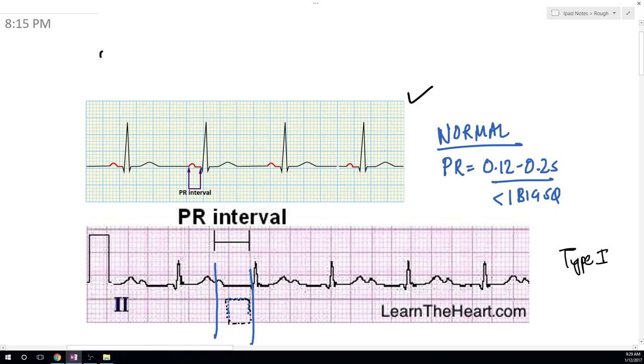First I will be talking about the ECG. This is the normal ECG where the PR interval is shown and it is generally in between 0.1 to 0.2 seconds, that is less than one big square. Now in type 1, there is slowing of the conduction through AV node, so the PR interval will increase and it will increase for more than one big square.